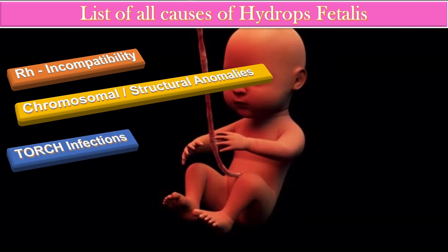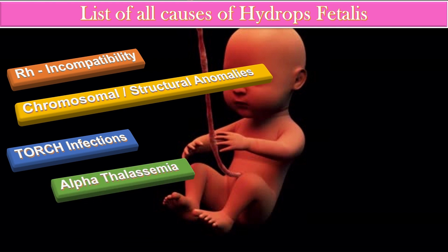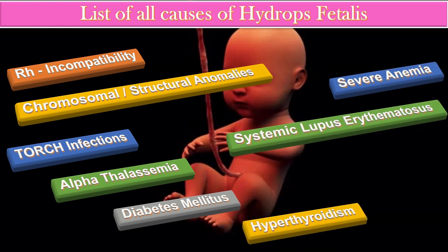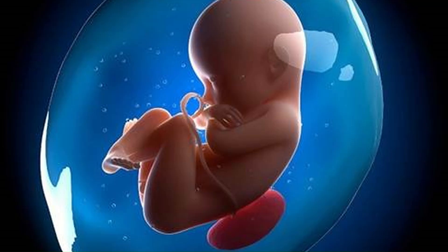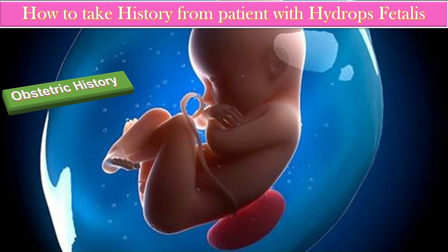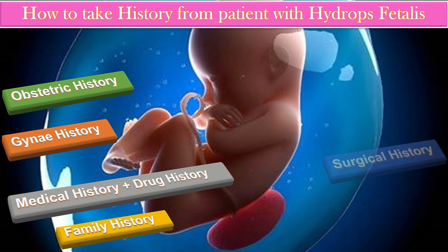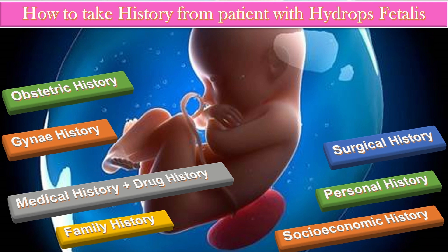For TORCH infection, take history of flu-like symptoms such as fever, sore throat, and rash. Inquire about the possibility of alpha thalassemia or history of blood transfusion in the patient or family. Then inquire about the possibility of maternal diabetes mellitus, severe anemia, or systemic lupus erythematosus. Ask about weight loss, palpitations, and cold intolerance to rule out hyperthyroidism. After the differential diagnosis questions, take detailed obstetric history including history of the same problem in previous pregnancies, cause, timing, mode of delivery, and outcome. Also take gynecological, medical, drug, family, surgical, personal, and socio-economic history.